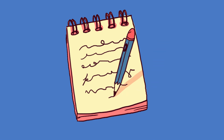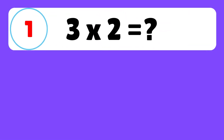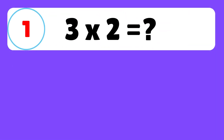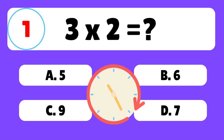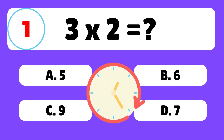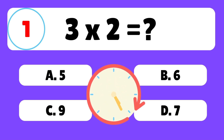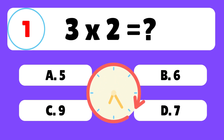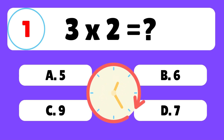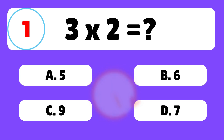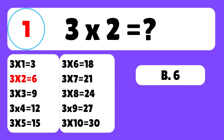What is 3 times 2? The answer is B. 3 times 2 is equal to 6.